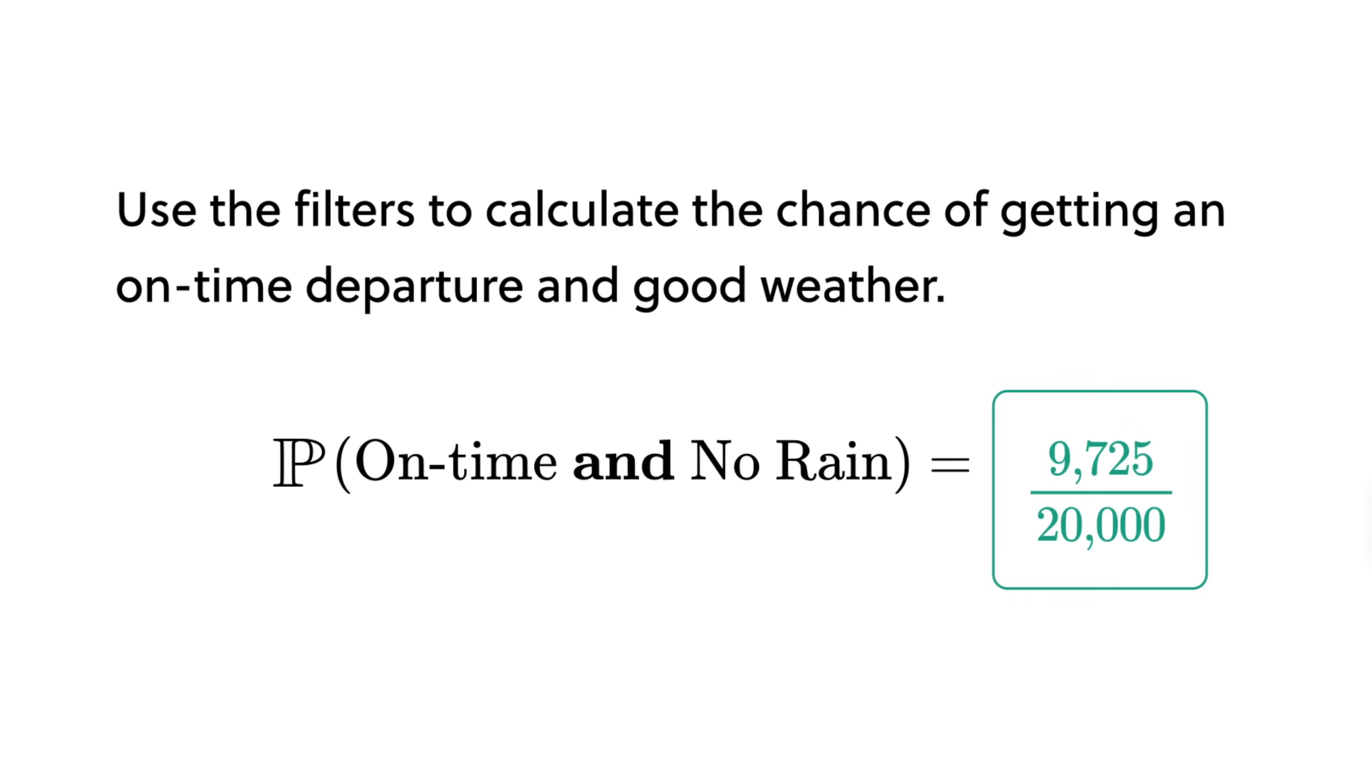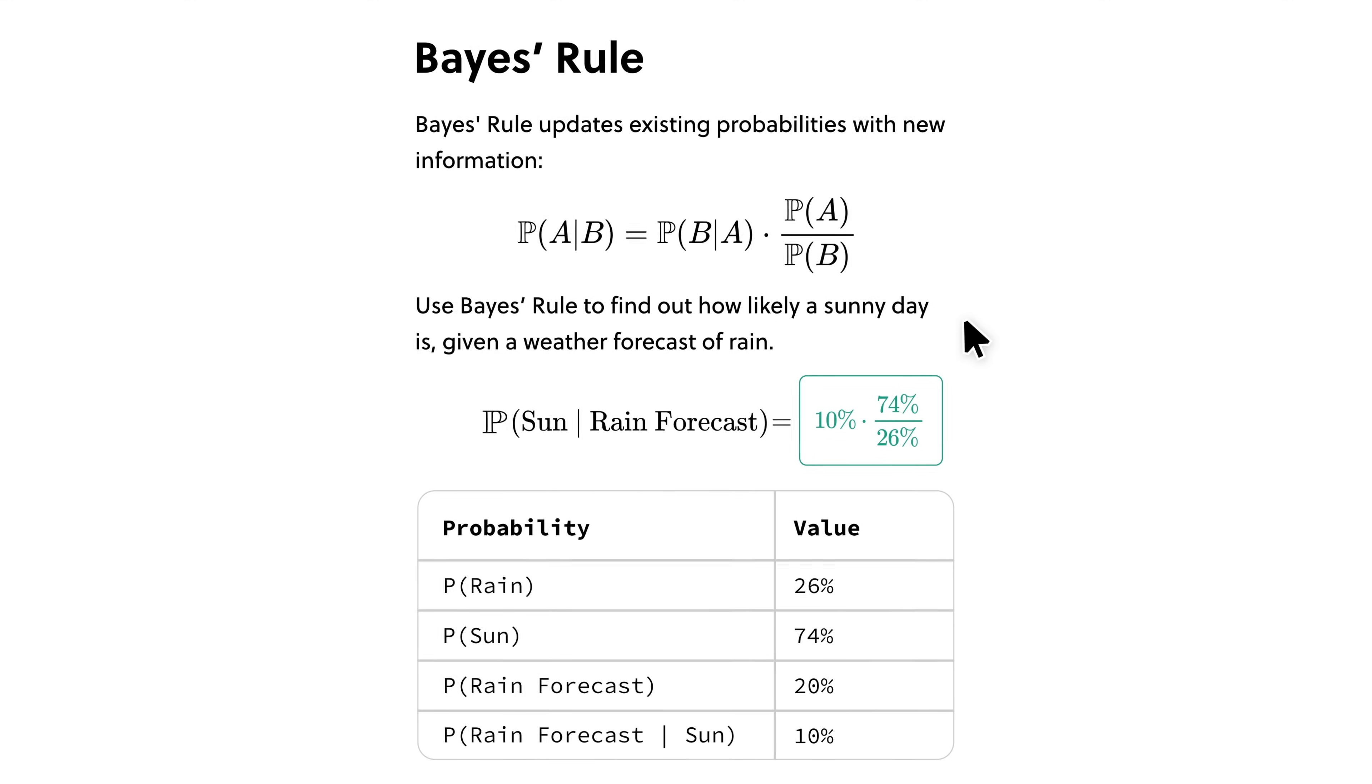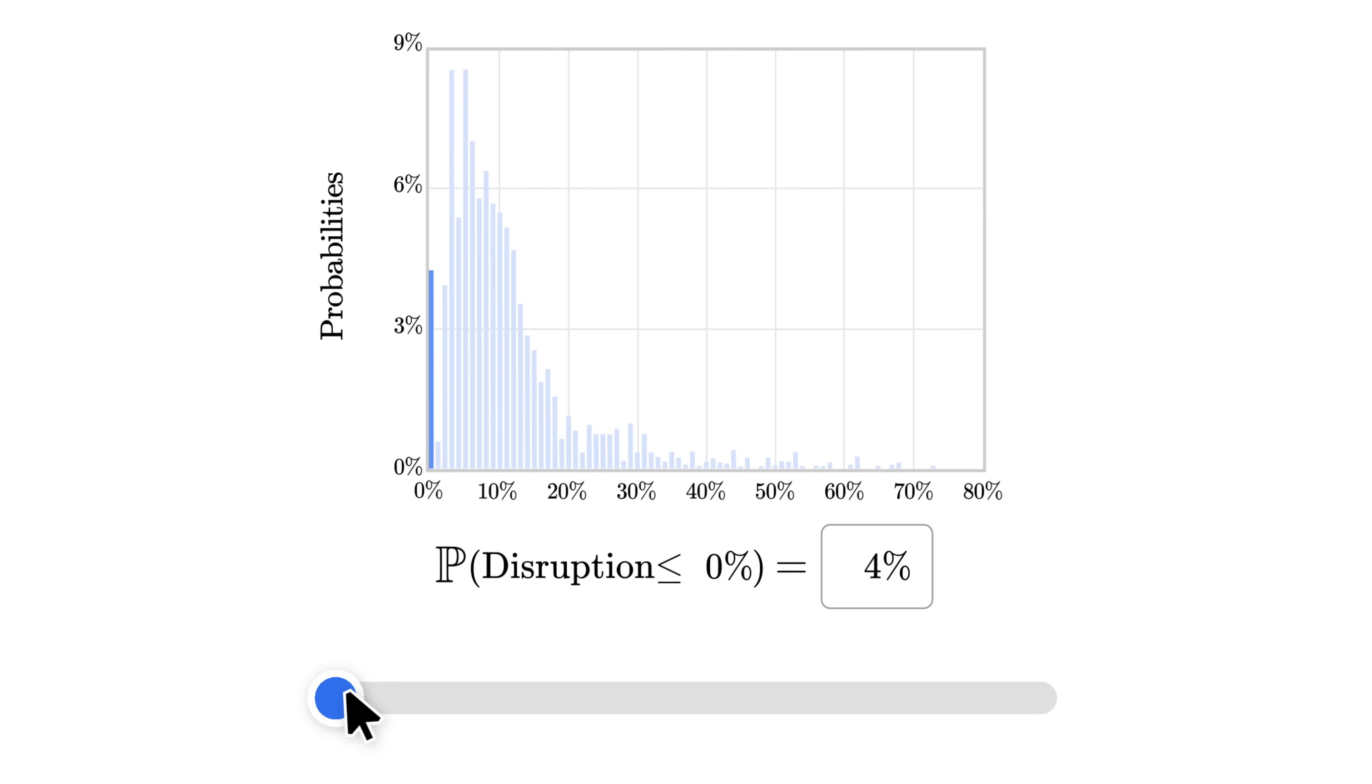Or you can master Bayes' rule, a powerful tool for refining your thinking and updating your beliefs by combining what you know with new evidence. In today's world, these critical thinking skills are absolutely essential.